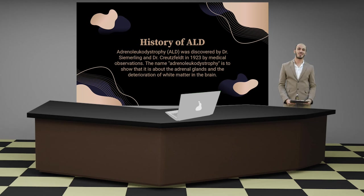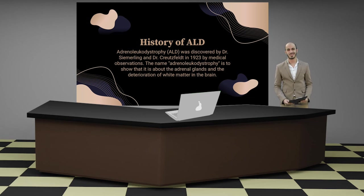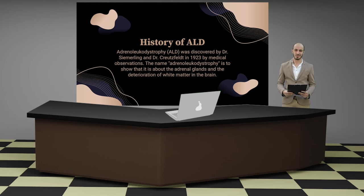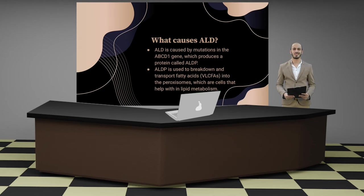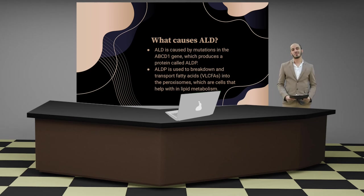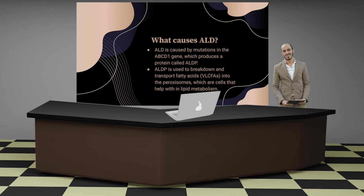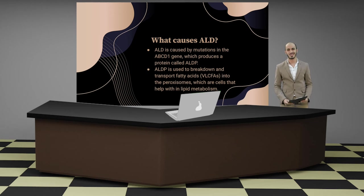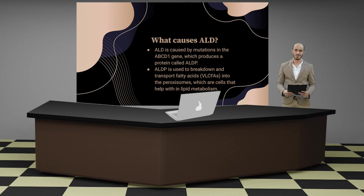The name adrenoleukodystrophy reflects that it involves the adrenal glands and the deterioration of white matter in the brain. ALD is caused by mutations in the ABCD1 gene, which produces a protein called ALDP. ALDP is used to break down and transport fatty acids, VLCFAs, into the peroxisomes, which are cells that help with lipid metabolism.